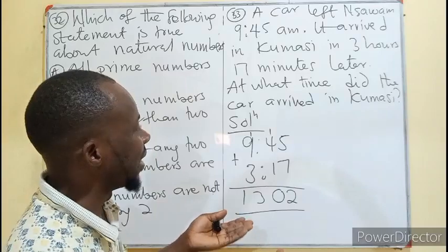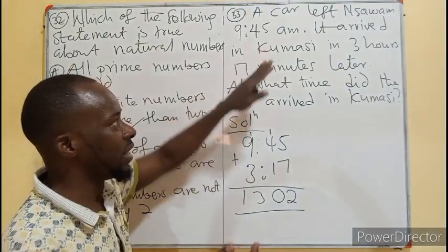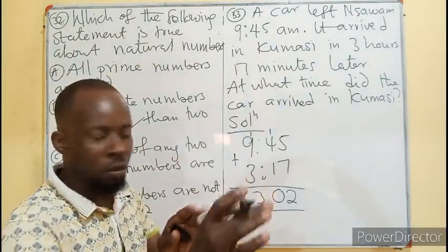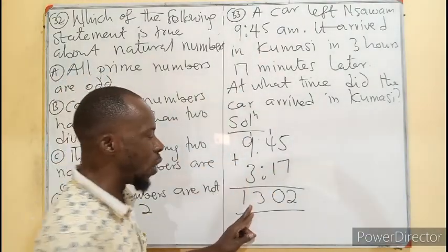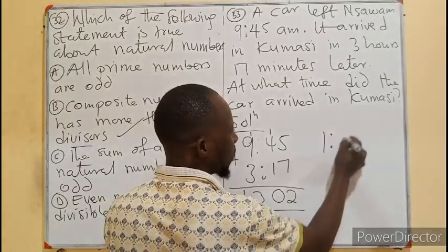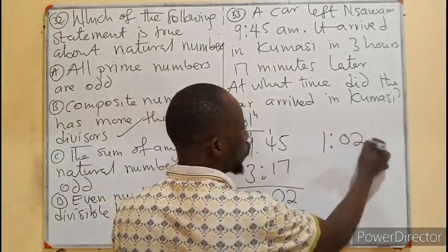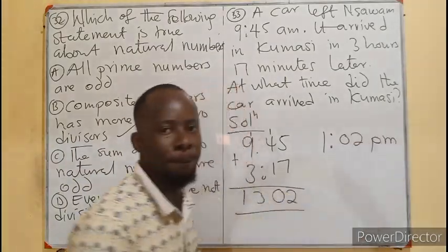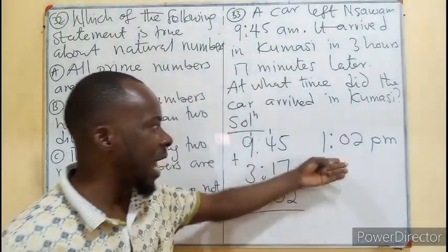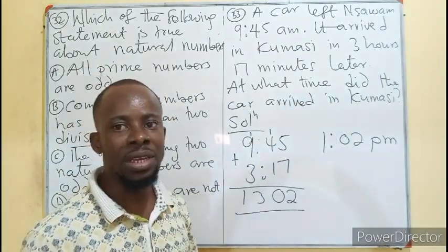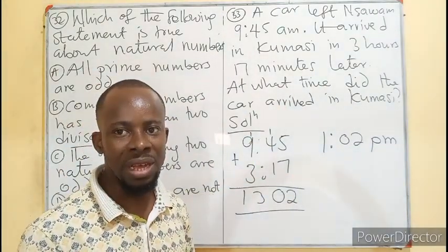If you are writing this in 12-hour clock, 13:02 is going to be 1 o'clock, so 1:02 PM. This is the time that the car will be arriving in Kumasi. I believe the concept is clear.